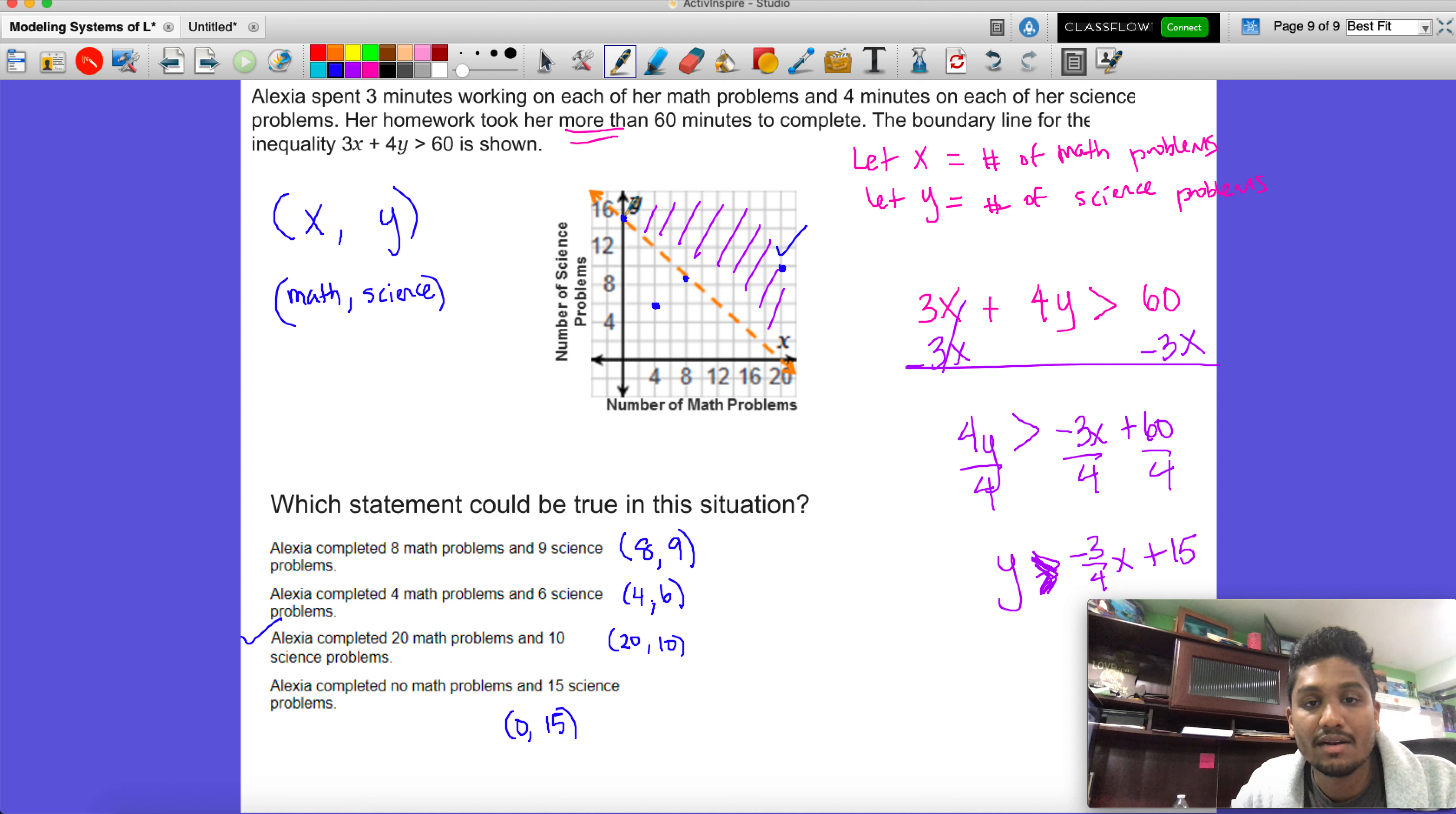Let me just show you so that you understand that. If we use zero comma 15, they use 3x plus 4y is greater than 60. Now again, this is on a dashed line. So if we were to substitute x for zero, y for 15, we get zero.